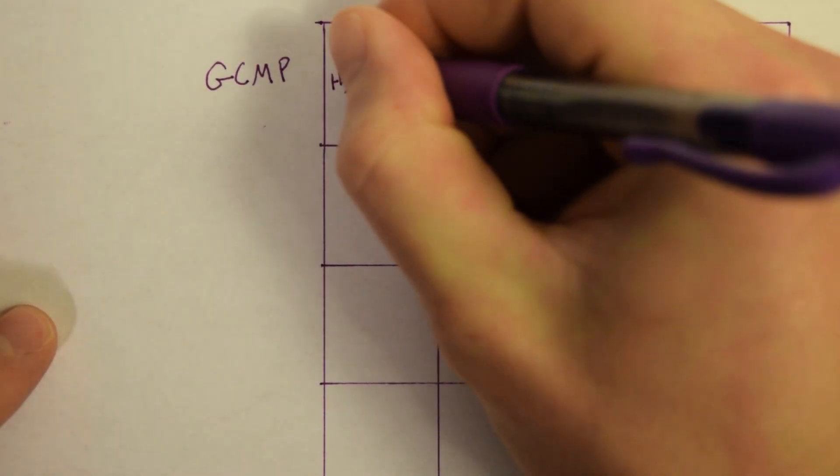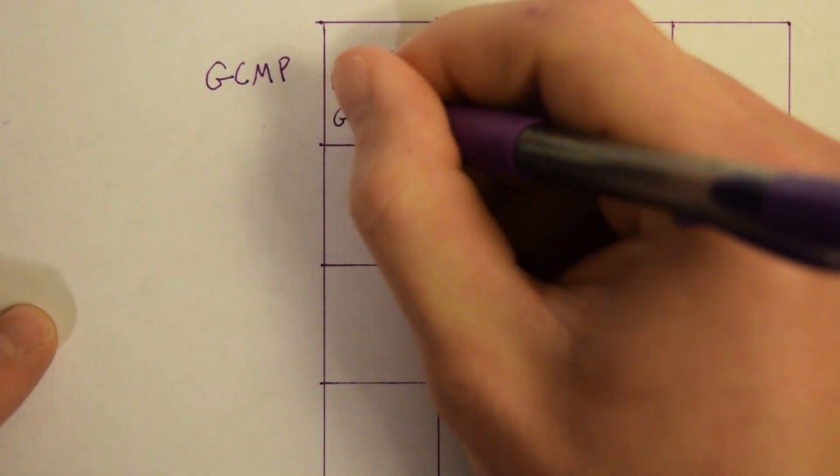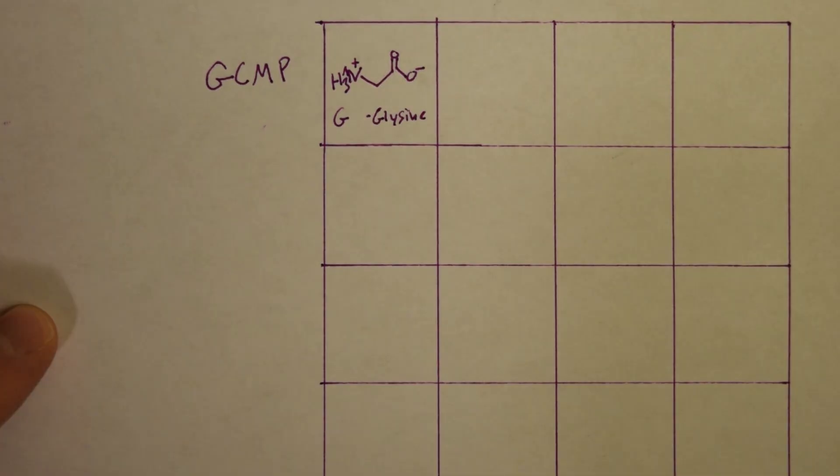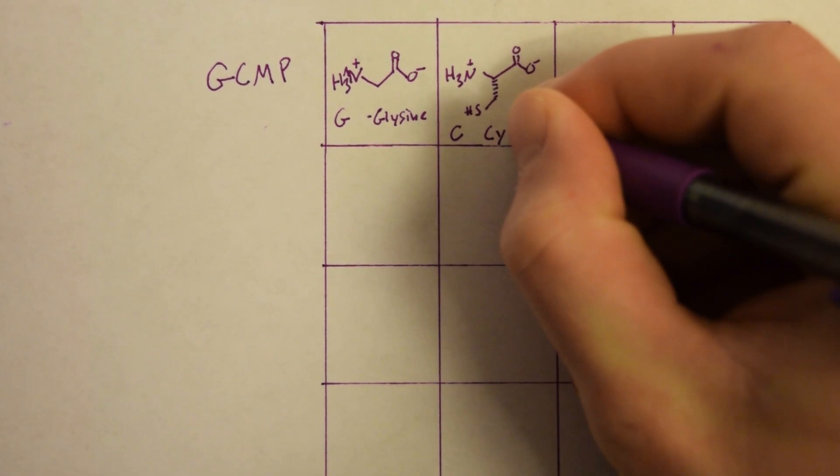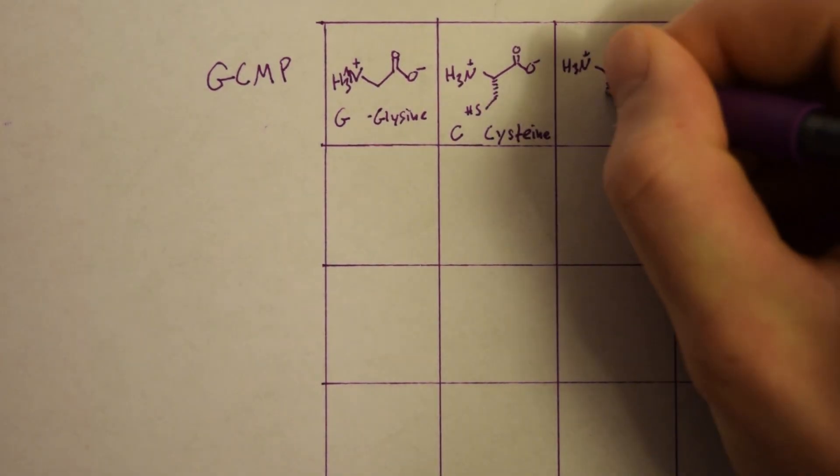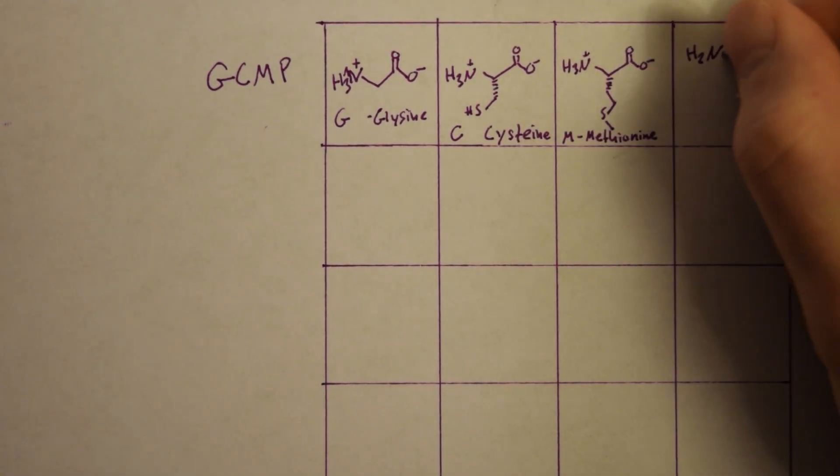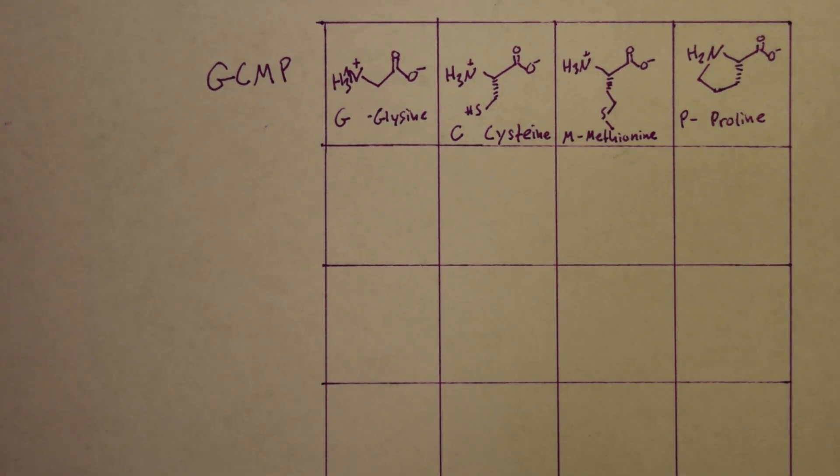So the first line is GCMP. Glycine is the simplest amino acid, it doesn't have a side chain at all. Cysteine has one carbon, then a sulfur and a hydrogen. Methionine has two carbons, a sulfur, then a methyl group. Proline has a five-membered ring that includes the nitrogen.